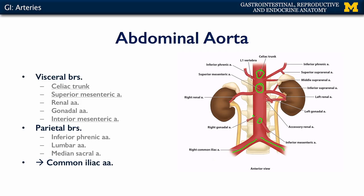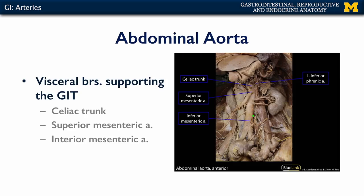Let's take a look at what the celiac, the SMA, and the IMA branch to serve. Here is a cadaveric view of the abdominal aorta, and we can see these anteriorly associated celiac trunk, SMA, and IMA. The celiac trunk is going to serve the foregut, the SMA is going to serve the midgut, and the IMA is going to serve the hindgut.